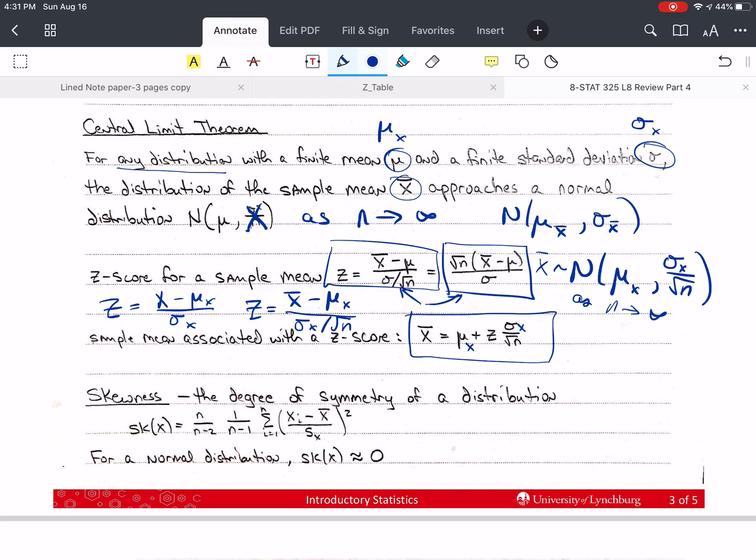Now let's talk about skewness. I don't expect you to know this or calculate it. The computer can do that for us, but it's interesting and good to know the definition. The degree of symmetry of a distribution is given by skewness, SK of x. Notice that it's n over n minus 2, 1 over n, and then the sum of xi minus x bar over s of x, that quantity squared.